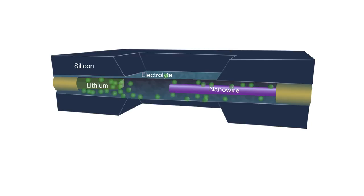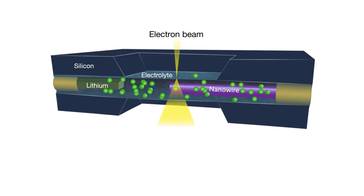A silicon nitride window at the center of the chip allows an electron beam to go through and capture lithium transport in action as the battery is charged and discharged.